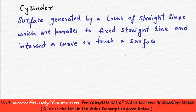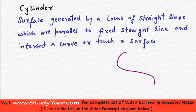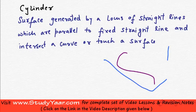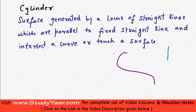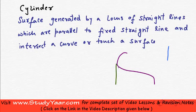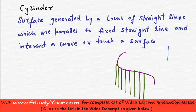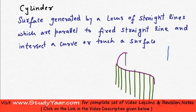Let's see what a cylinder looks like. Suppose I have a curve, and a fixed straight line in a plane different from this curve. The locus of straight lines which are parallel to this fixed line would look like this — these straight lines intersect the curve. This is essentially a cylinder.